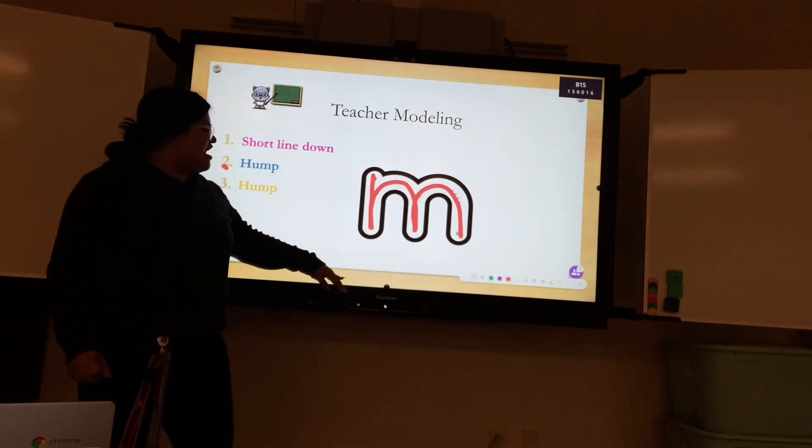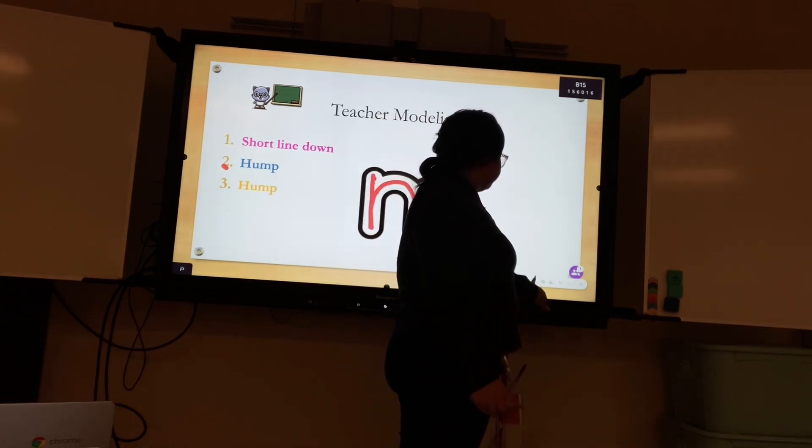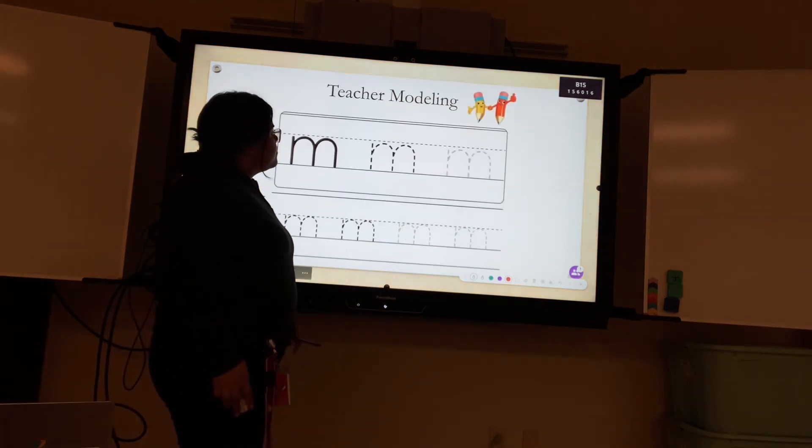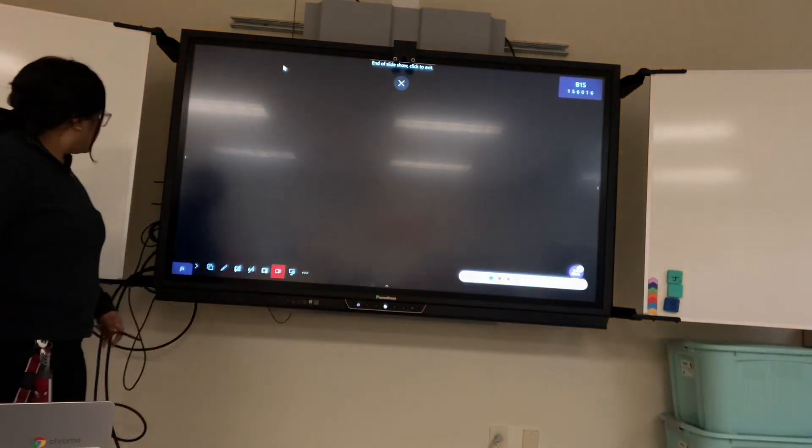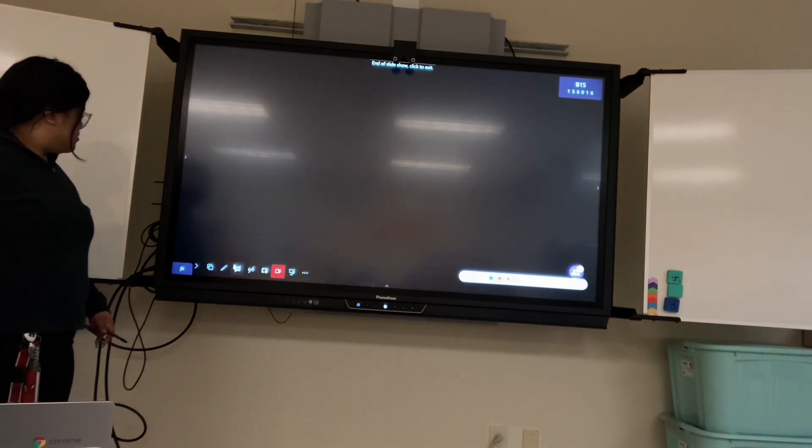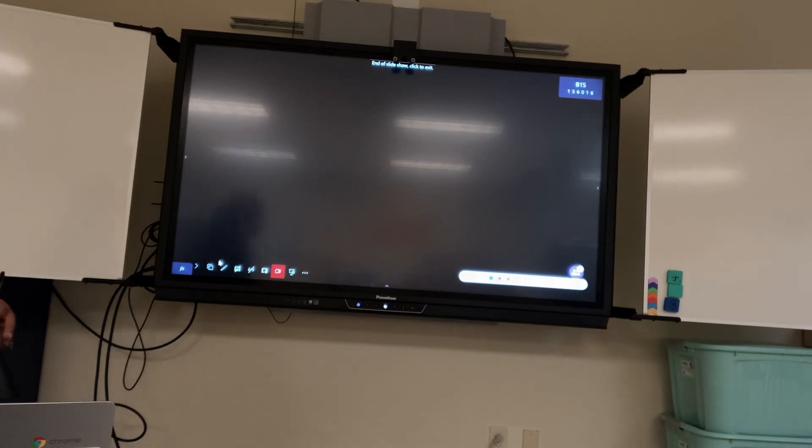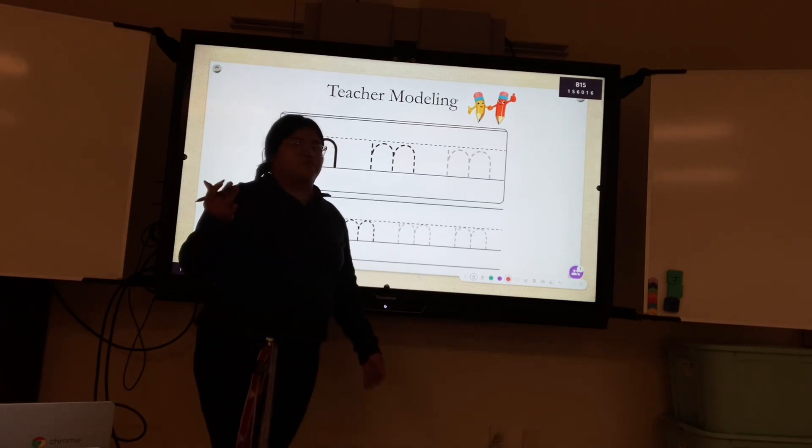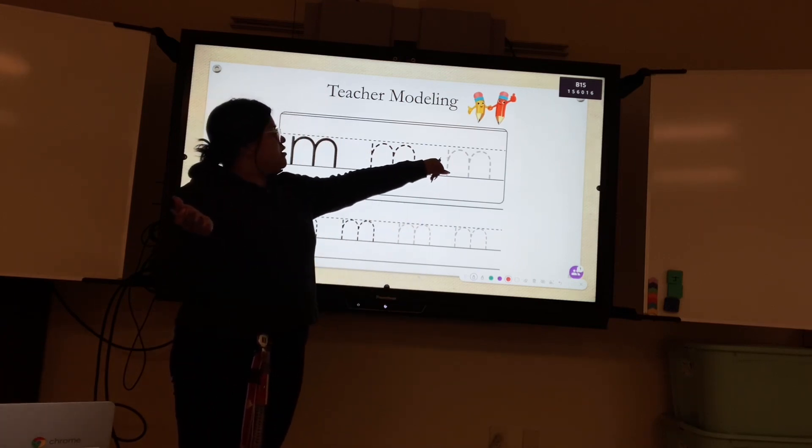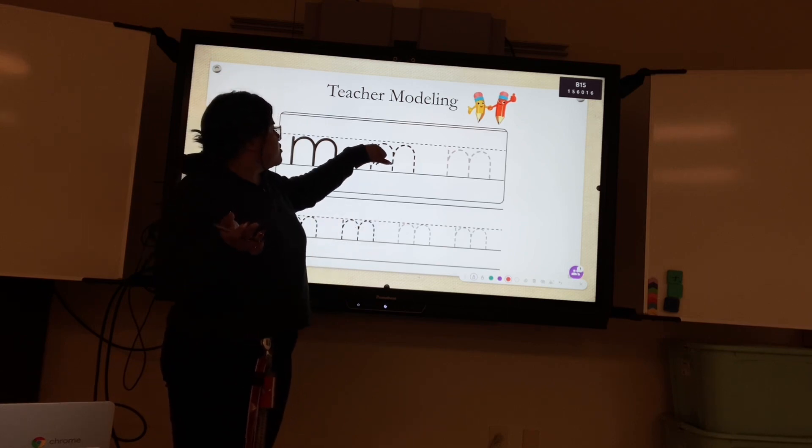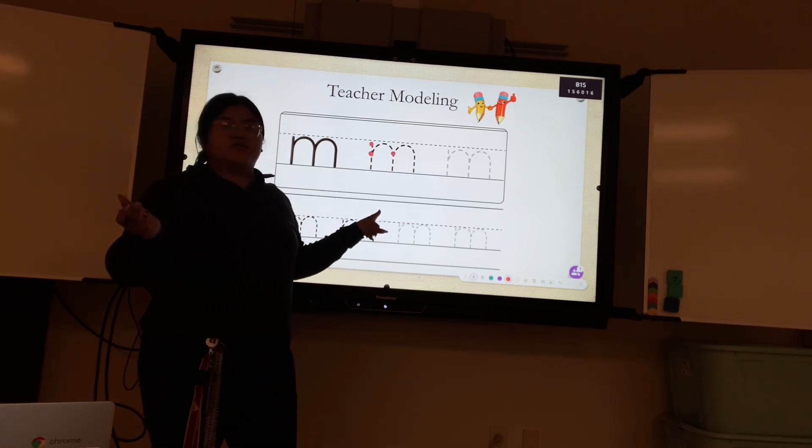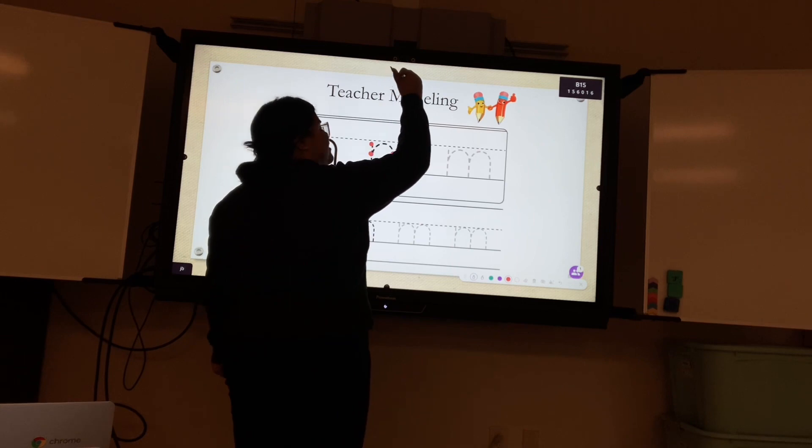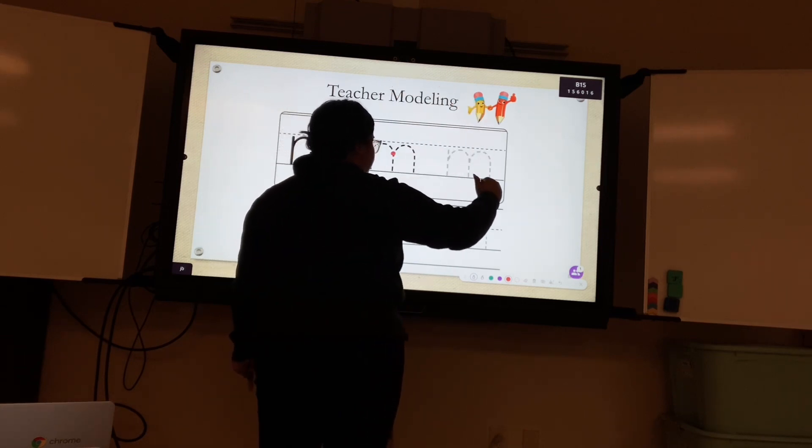So now that we know our steps, we are now going to learn how to do it. But notice how these, it doesn't have the steps. You know how the other one has the numbers here, here, and here? This one doesn't have the numbers on there. But remember, what was the steps again? Line down. Hump. Hump.